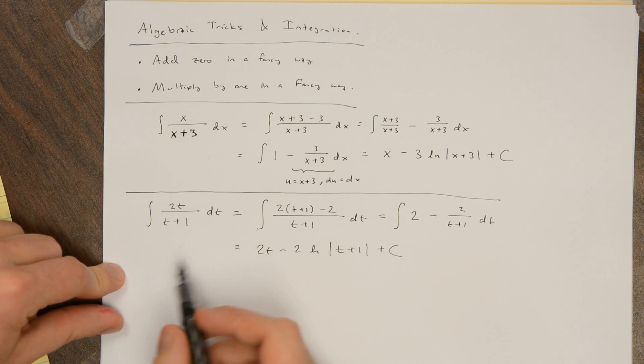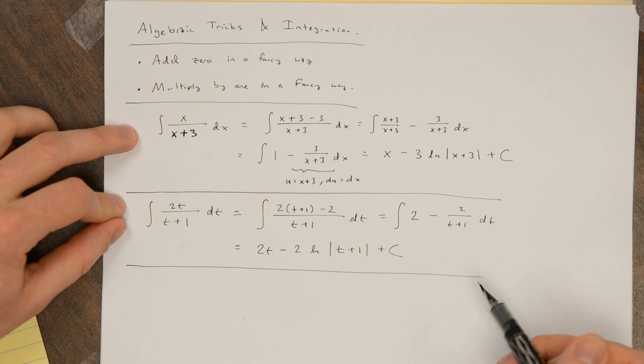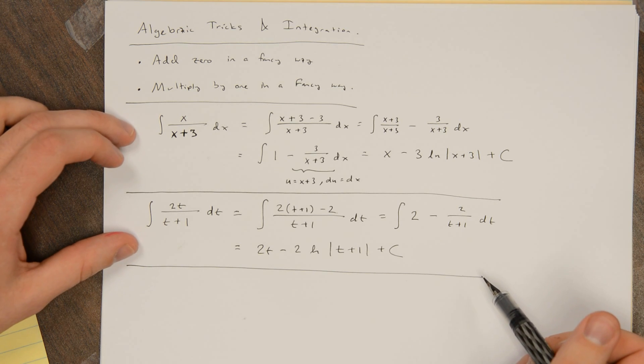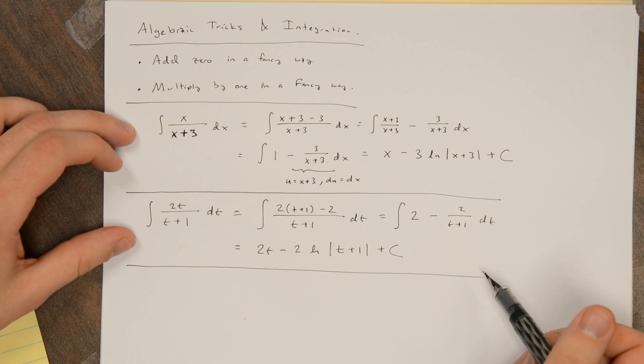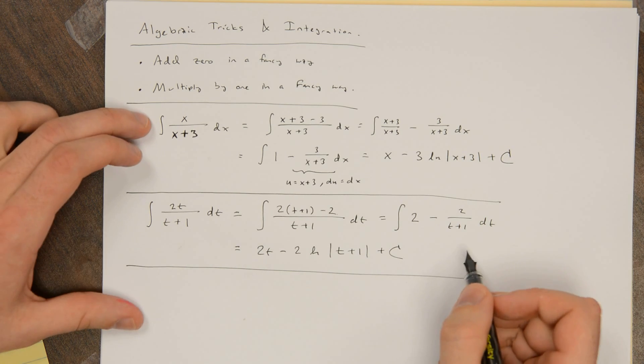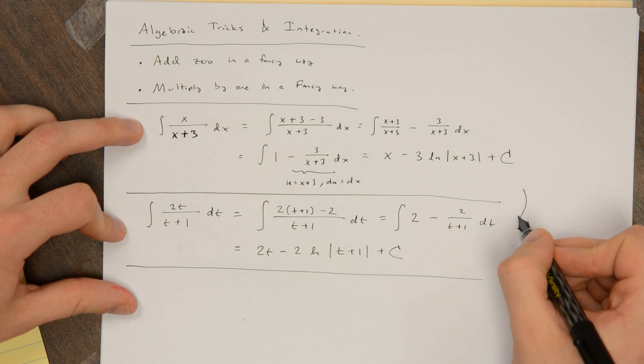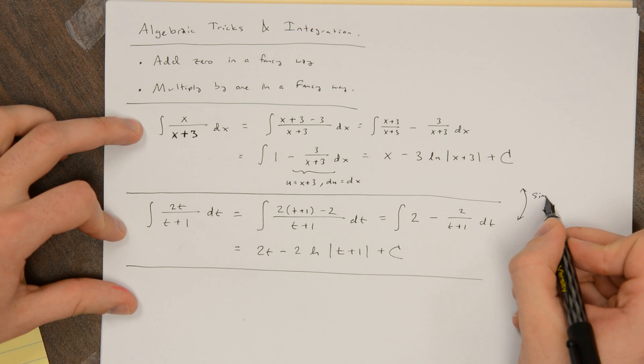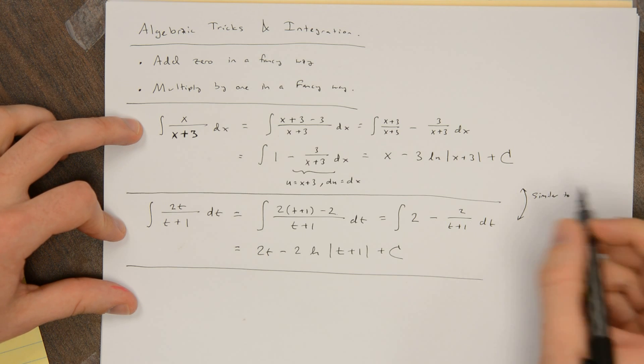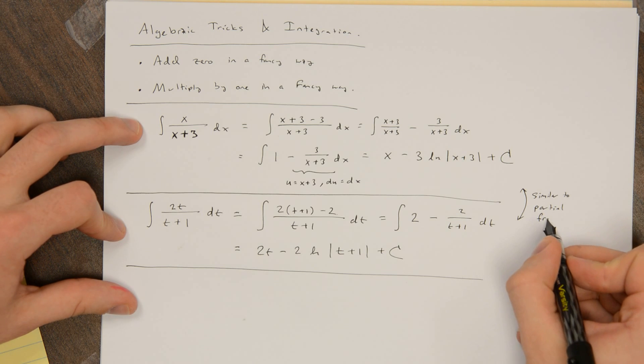So by adding 0 in a fancy way, we can do these integrals maybe more rapidly than we would be able to by doing a substitution. It can make your life a lot easier. And this is related to a topic that we'll talk about later. These are tricks not unlike partial fractions, which is an integration technique that we'll talk about soon.